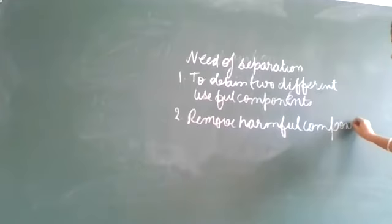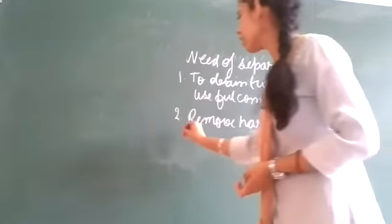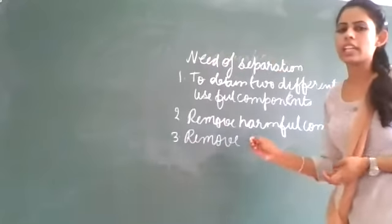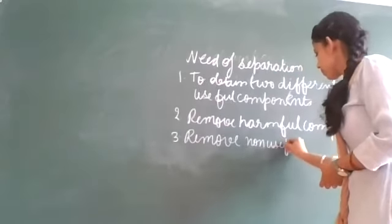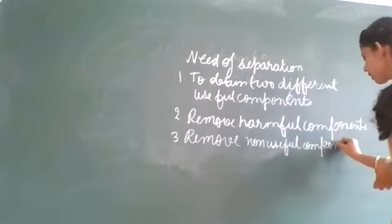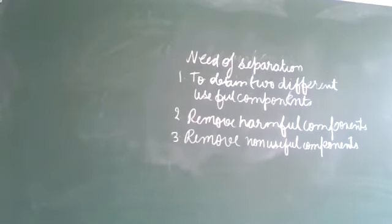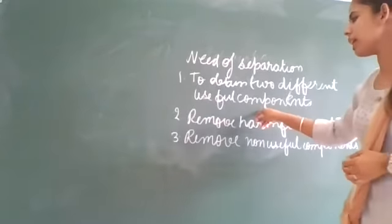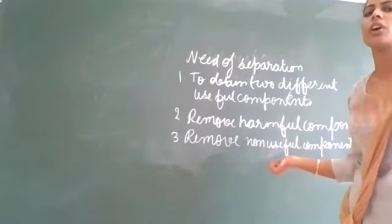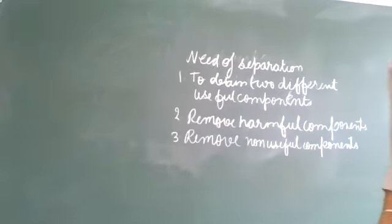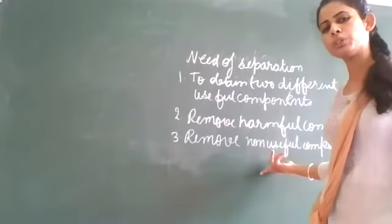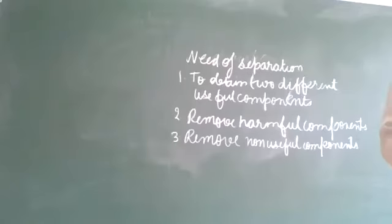We can remove the non-useful thing. While preparing tea, we don't need the tea leaves, so we remove the non-useful components. In summary: first, butter is separated from milk to get a useful component. Second, harmful components like stones are separated from rice or pulses. Third, non-useful components like tea leaves are removed during preparation of tea.